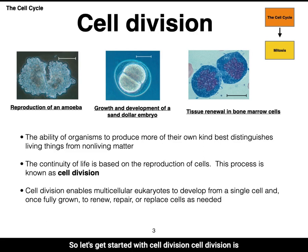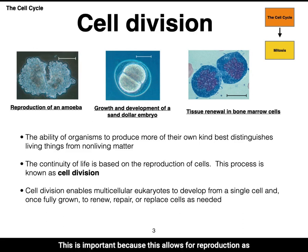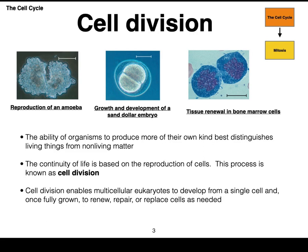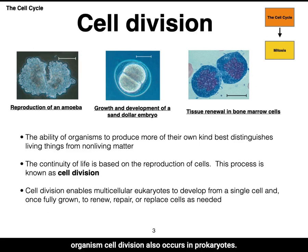Let's get started with cell division. Cell division is the process by which cells divide. The ability of organisms to produce more of their own kind is one of the characteristics that distinguishes living things from non-living matter. This is important because it allows for reproduction as well as growth, development, and tissue renewal. In the first image you see a micrograph of an amoeba — a single-cell eukaryote dividing into two daughter cells, each of which will become a new organism. Cell division also occurs in prokaryotes.